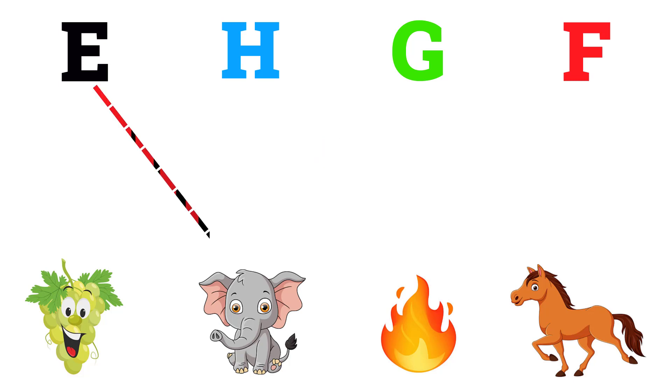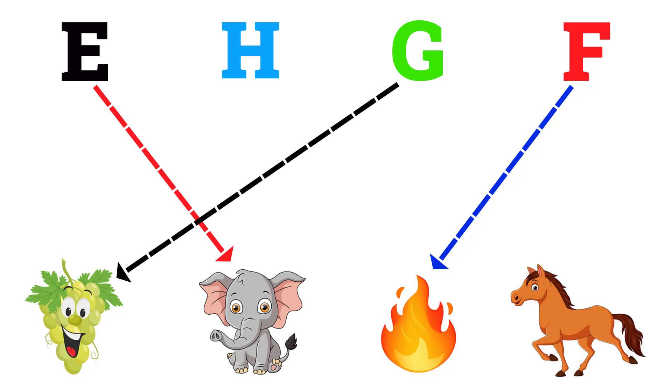E for elephant, F for fire, G for grapes, H for horse.